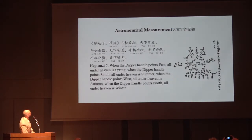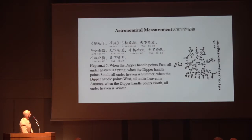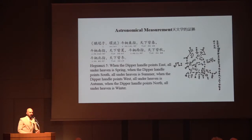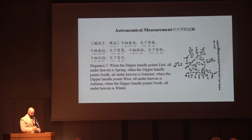This is from the 'Master Pheasant Catch' classic: 'When the dipper handle points east, all under heaven is spring. When the dipper handle points south, all under heaven is summer. When the dipper handle points west, all under heaven is autumn. When the dipper handle points north, all under heaven is winter.' This is where we get our directions associated with the seasons and elements. Years ago a Chinese medicine student asked me why the east relates to wood, and I couldn't answer. It comes from the orientation of the Northern Dipper — this is the origin for all our directional practices in feng shui.